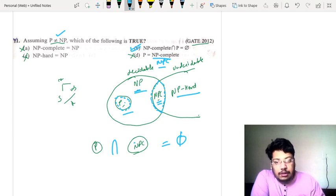So this is true: NP-complete intersection with P is equal to phi (empty set).